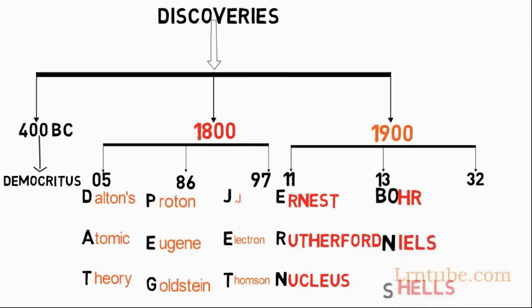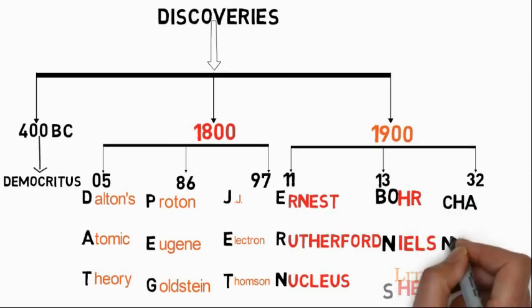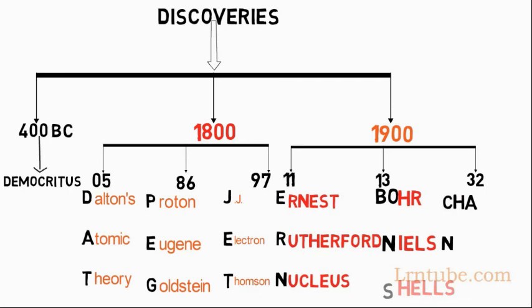In 1913, BONS represents Bohr Niels Shells. In 1913, Niels Bohr proposed that electrons are found in shells around the nucleus.